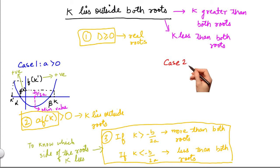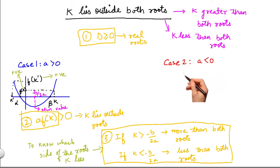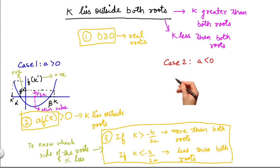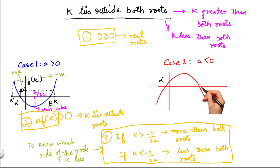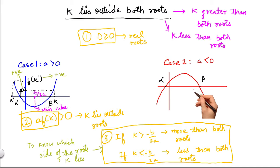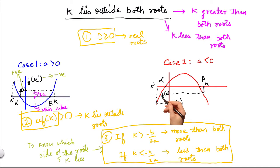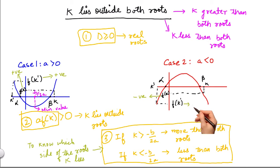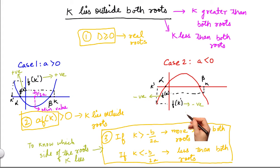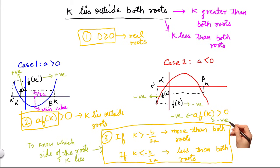Similarly, let's try the case when a is less than 0 and D is greater than 0. If we assume any number k that lies outside alpha and beta — the roots — then the product a into f(k) will be greater than 0, because a is less than 0 and f(k) is always less than 0. We can see from the graph that f(k) is less than 0, so a negative times a negative equals a positive, making a into f(k) greater than 0.